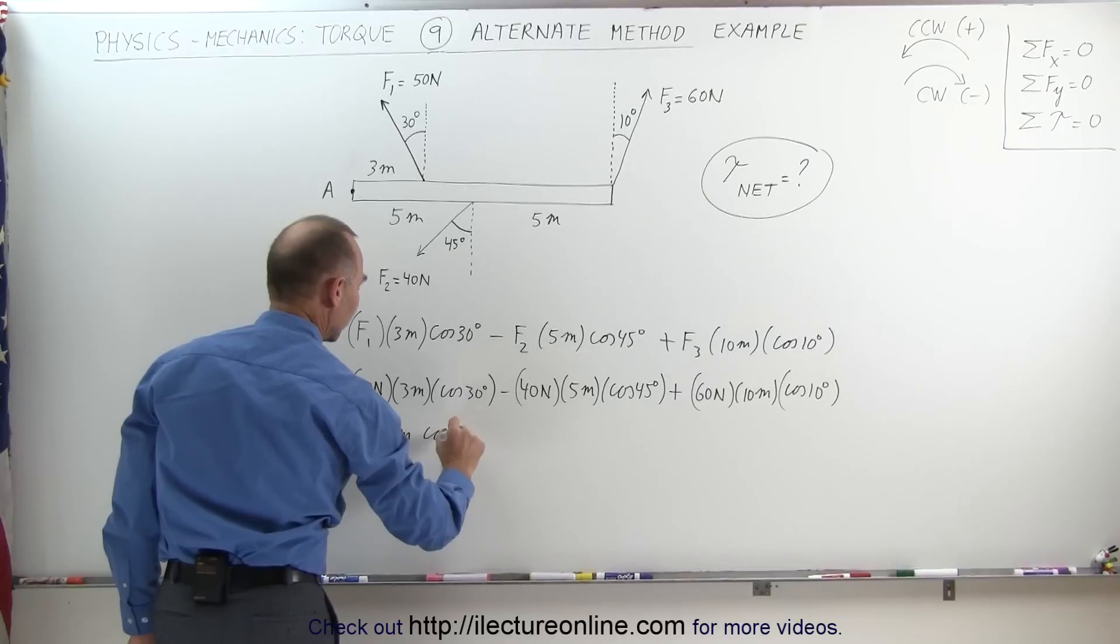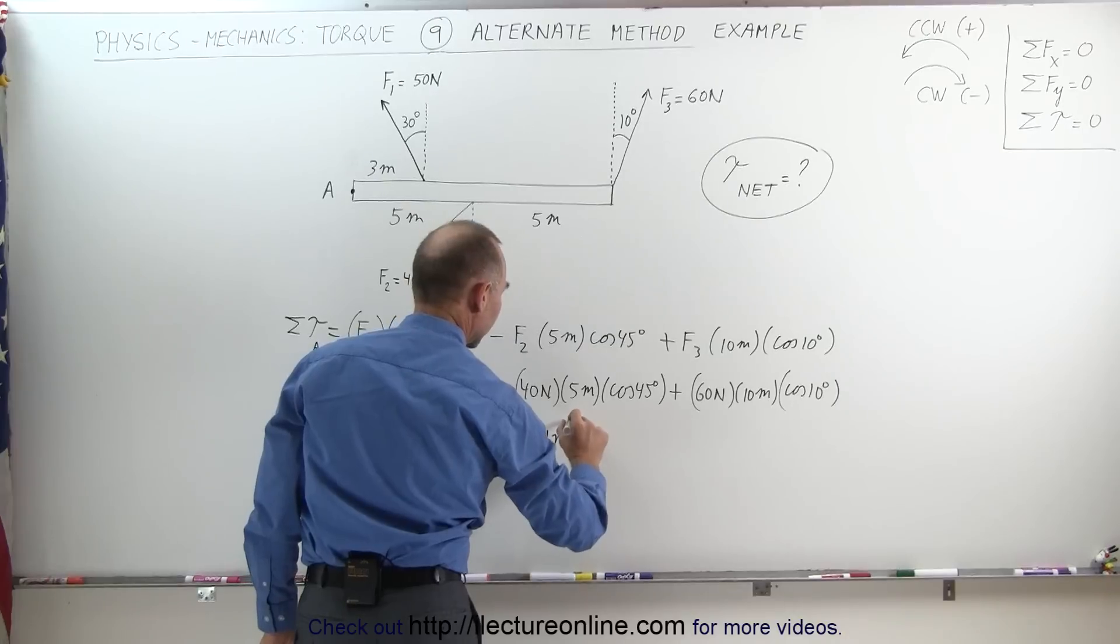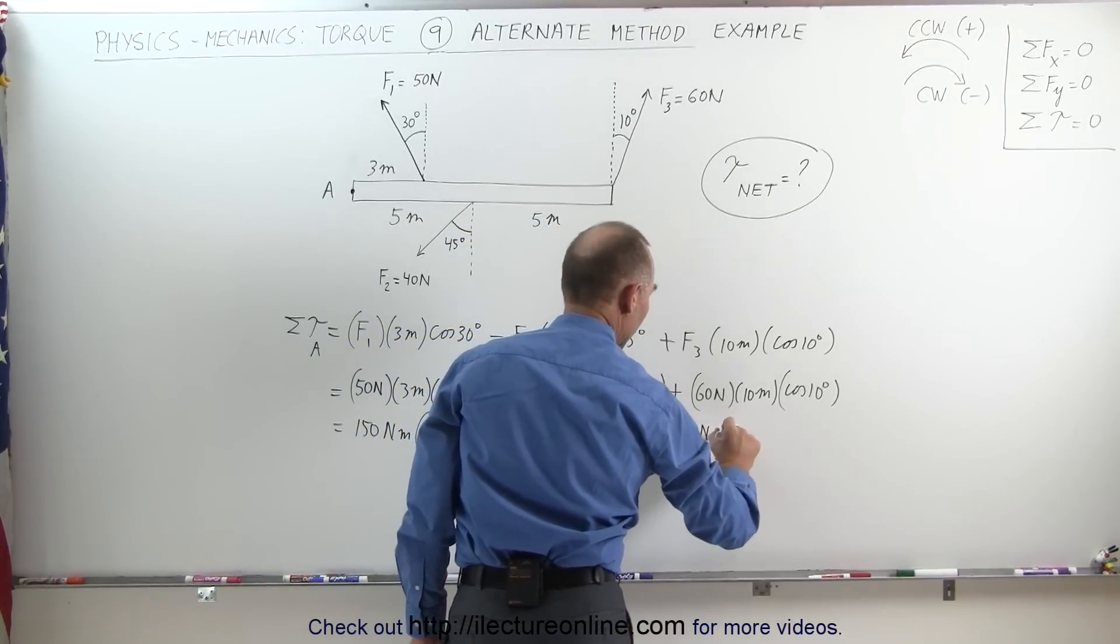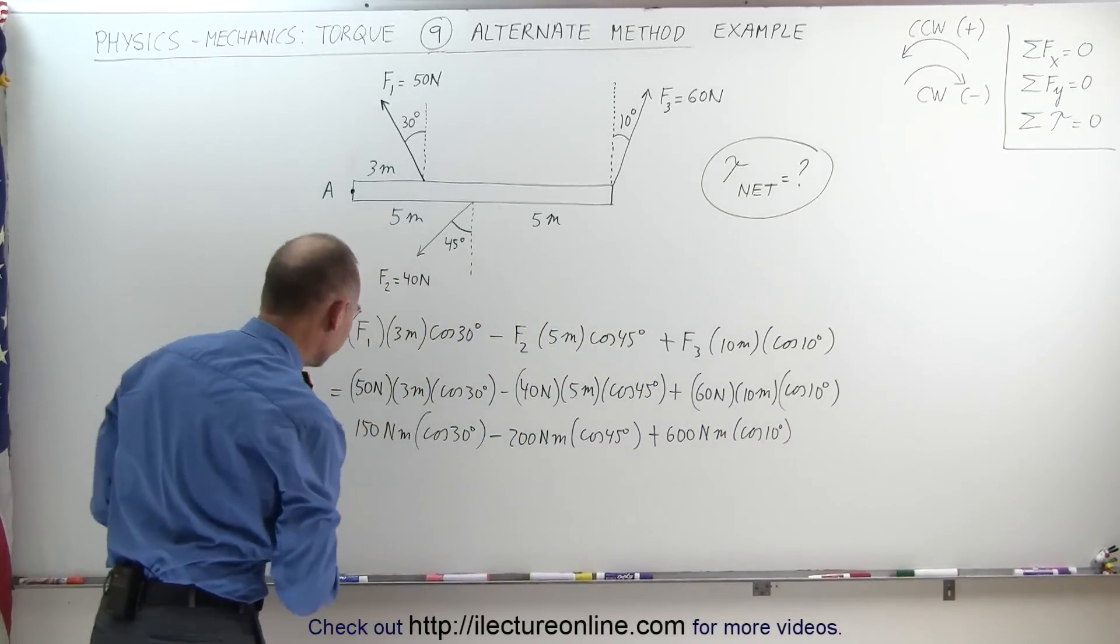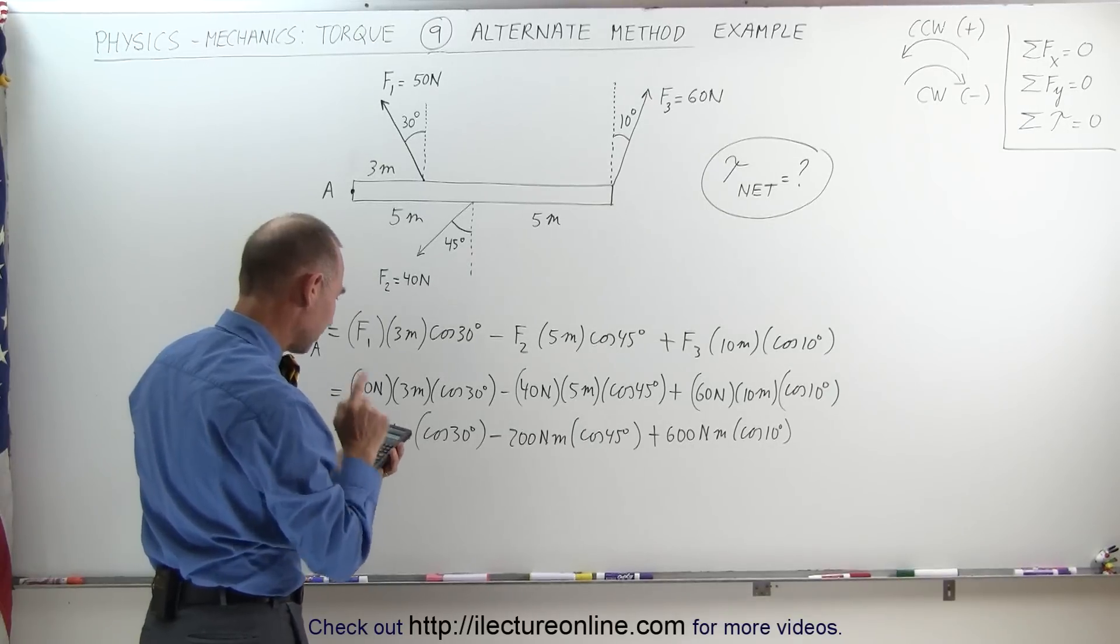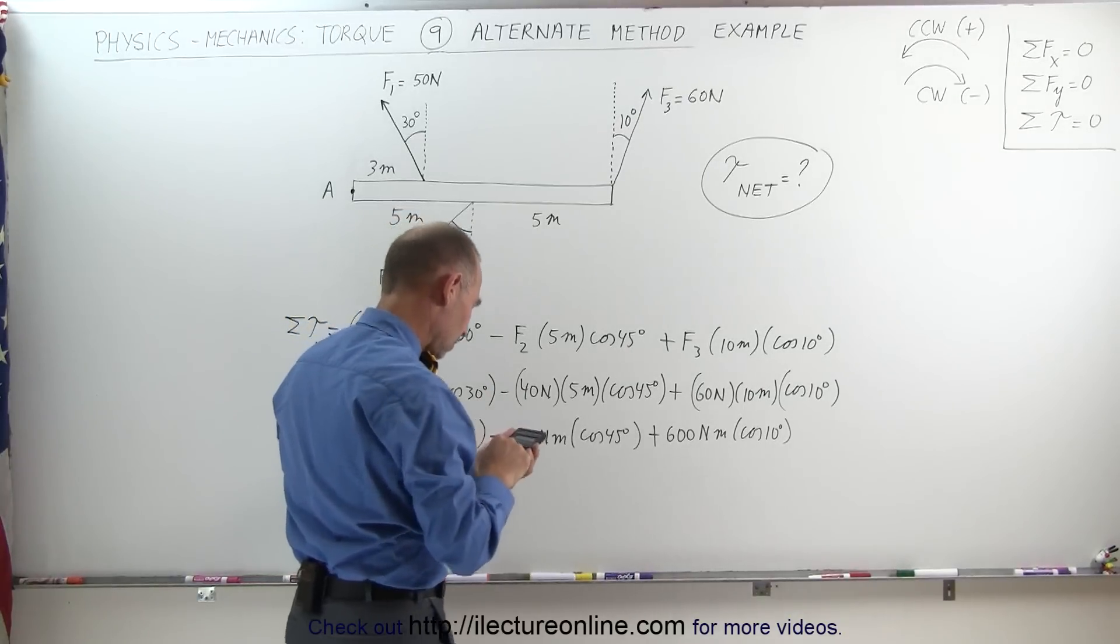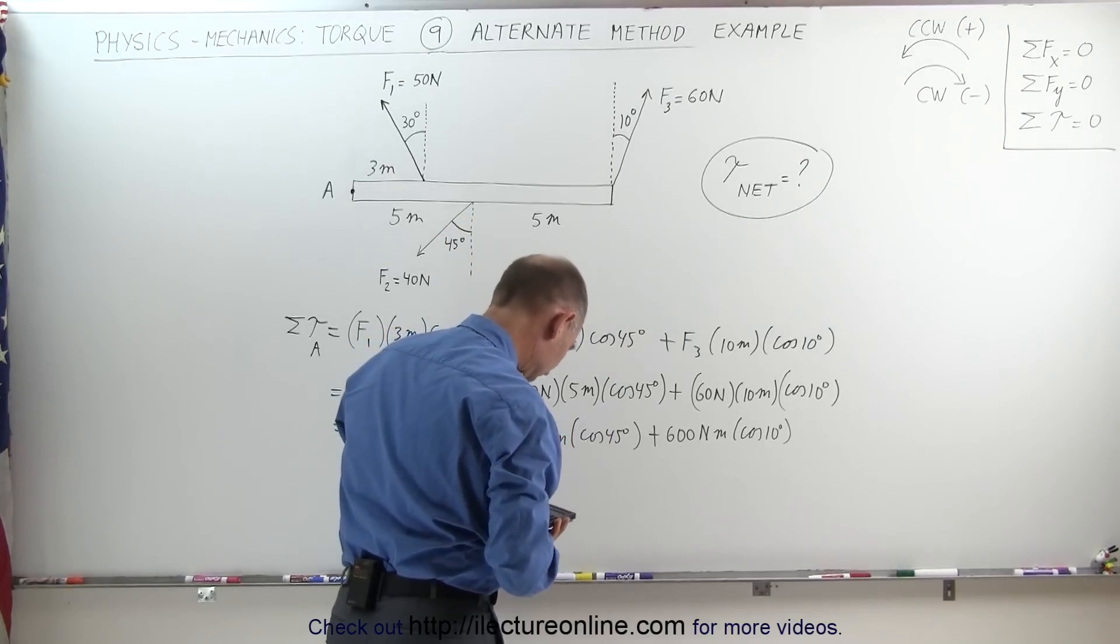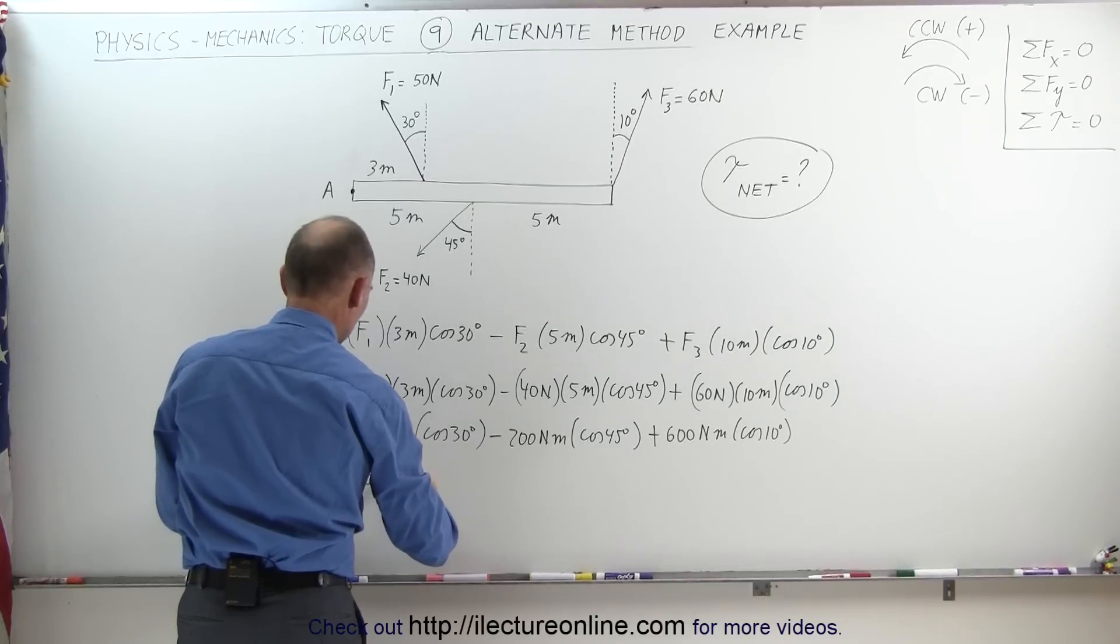Now we're ready with a calculator to find the final answer. 150 times cosine 30 minus 200 times cosine 45 plus 600 times cosine 10 equals... and the net torque would be equal to 579 newton-meters.